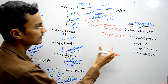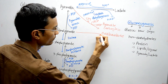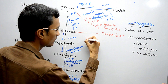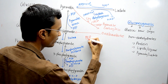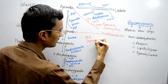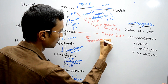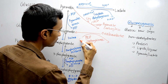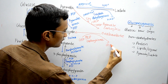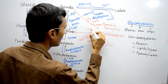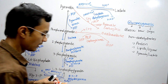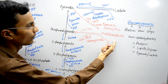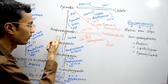This oxaloacetate is then converted into phosphoenolpyruvate through the enzyme phosphoenolpyruvate carboxykinase (PEPCK). In this reaction, GTP is used and GDP is produced, and carbon dioxide is released. So the pathway goes: pyruvate → oxaloacetate → phosphoenolpyruvate.